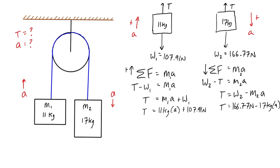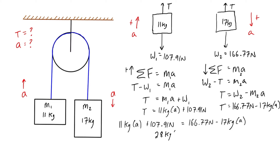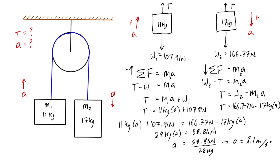Now we have two equations and two unknowns. Setting them equal to eliminate T and grouping like terms: 28a = 58.86 newtons. Dividing both sides: a = 58.86 ÷ 28 = 2.1 m/s². So mass 1 accelerates upward at 2.1 m/s² and mass 2 accelerates downward at 2.1 m/s².